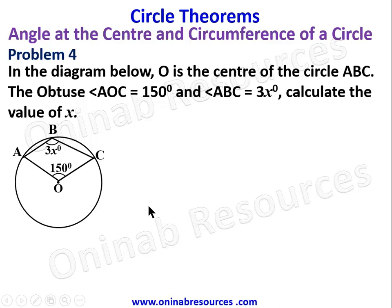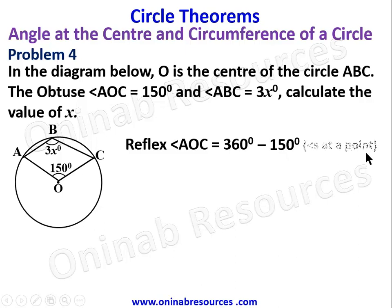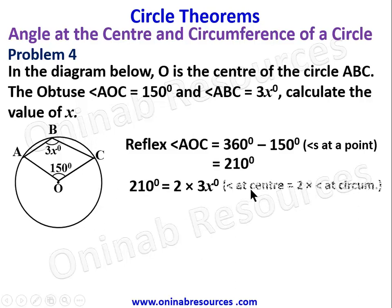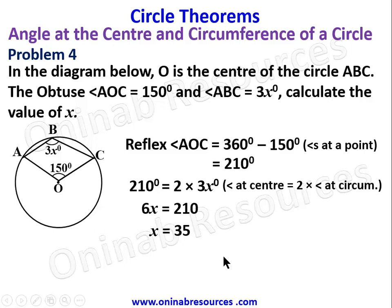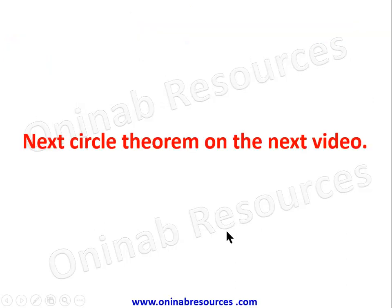Reflex angle AOC equals 360 degrees minus 150 degrees — angles at a point — giving 210 degrees. This reflex angle at the center is connected to the angle 3x at the circumference, so 210 degrees equals 2 times 3x — angle at center is twice angle at circumference. This gives 6x equals 210 degrees. Dividing both sides by 6, x equals 35. Problem four is complete.